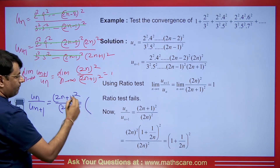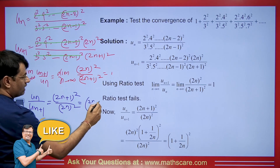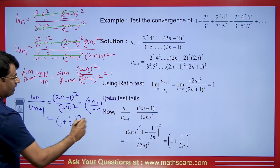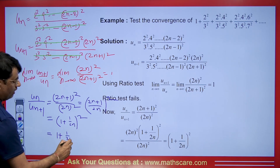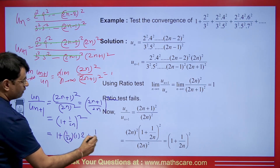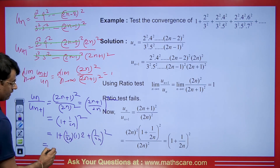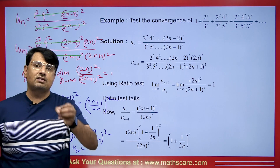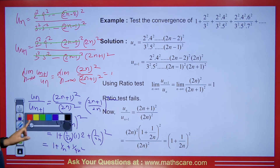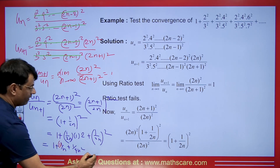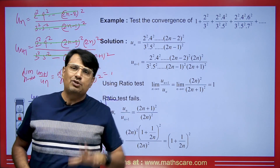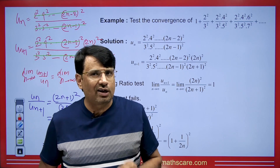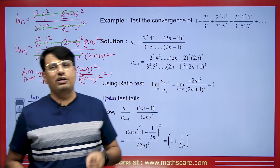Simplifying (2n+1)²/(2n)²: taking 2n common gives (1 + 1/(2n))². Expanding this: 1 + 2·(1/(2n)) + (1/(2n))² = 1 + 1/n + 1/(4n²). The coefficient of 1/n is rho, and the value of rho we get here is 1. Since the value of rho is 1 (which is 1 or less than 1), this series is divergent.